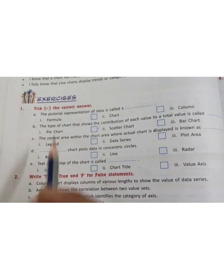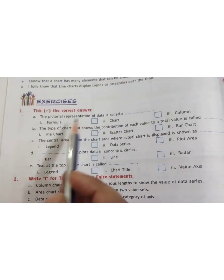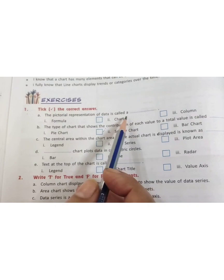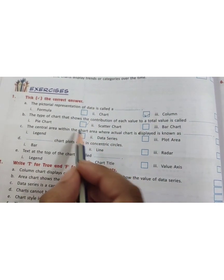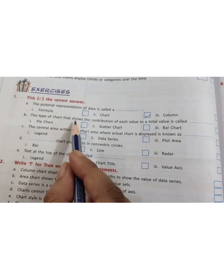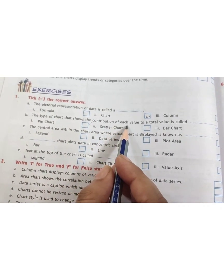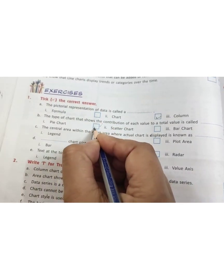First, tick the correct answer. The pictorial representation of data is called a chart. The type of chart that shows the contribution of each value to a total value is called a pie chart.